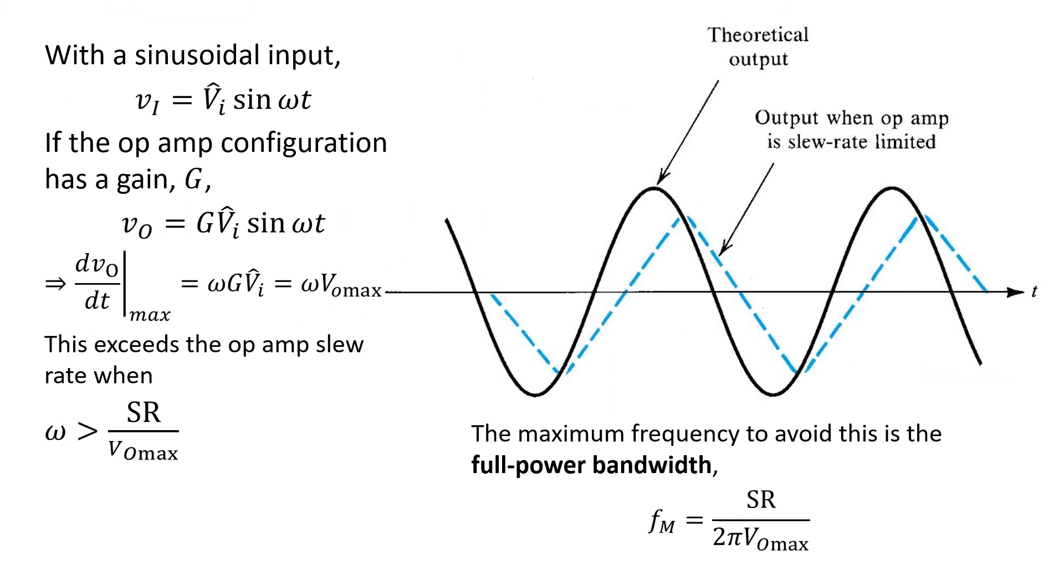Another case of interest that helps us illustrate the impact of slew rate limiting on op-amp circuits is what happens with a sinusoidal input. In this case, let's consider an input sinusoid at a frequency omega and with amplitude VI hat. And let's say that such an input is applied to an op-amp configuration that has a gain G. Now, for a sinusoidal input, we know that the fastest rate of change occurs at the zero crossings. And the rate of change at these points is equal to the frequency of the input omega times the amplitude of the sinusoid. At the output of the op-amp circuit, that would be the amplitude of the input, VI hat, times the gain of the configuration, G.